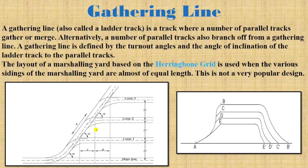Next is the gathering line, also called a ladder track. It is a track where a number of parallel tracks are gathered and merged, or alternatively, where a number of parallel tracks branch off from the gathering line. A gathering line is defined by the turnout angle and the angle of inclination of the ladder track to the parallel tracks.